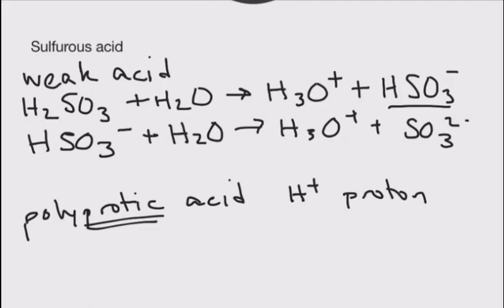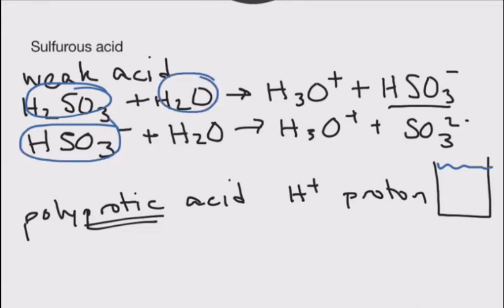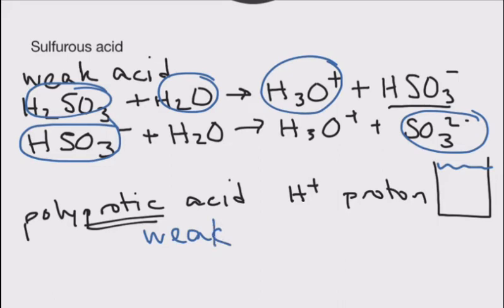Now I told you this is a weak acid. What that means is in our beaker we will have all of these species: H2SO3, HSO3-, water, hydronium ion, and SO32-. All of those species will remain in our beaker because it's a weak acid and does not dissociate completely.